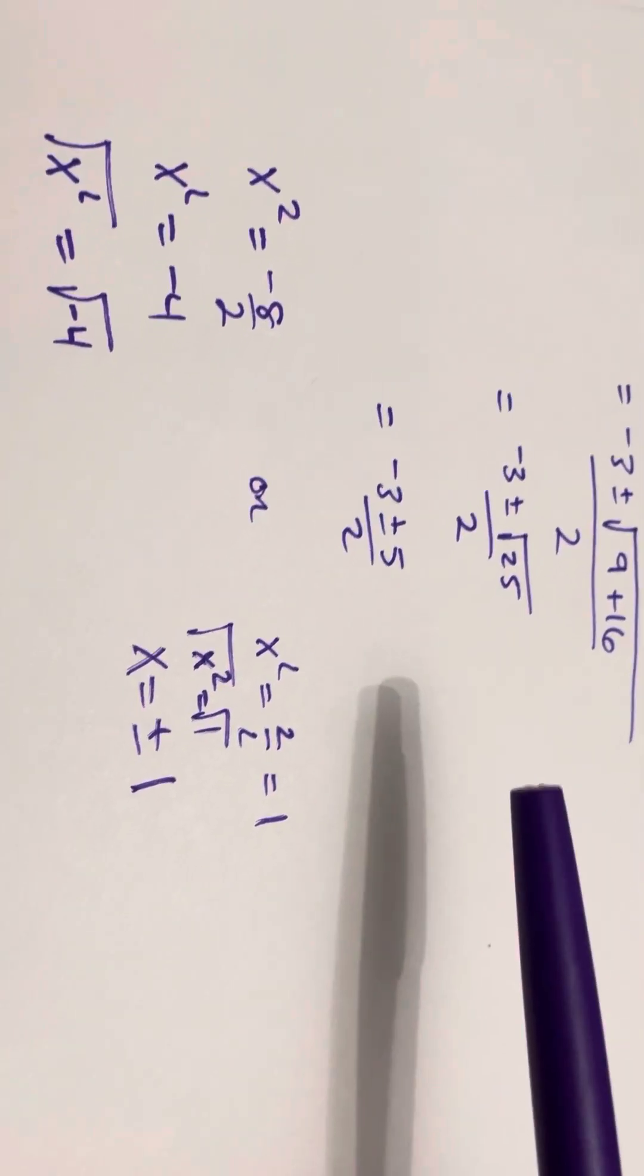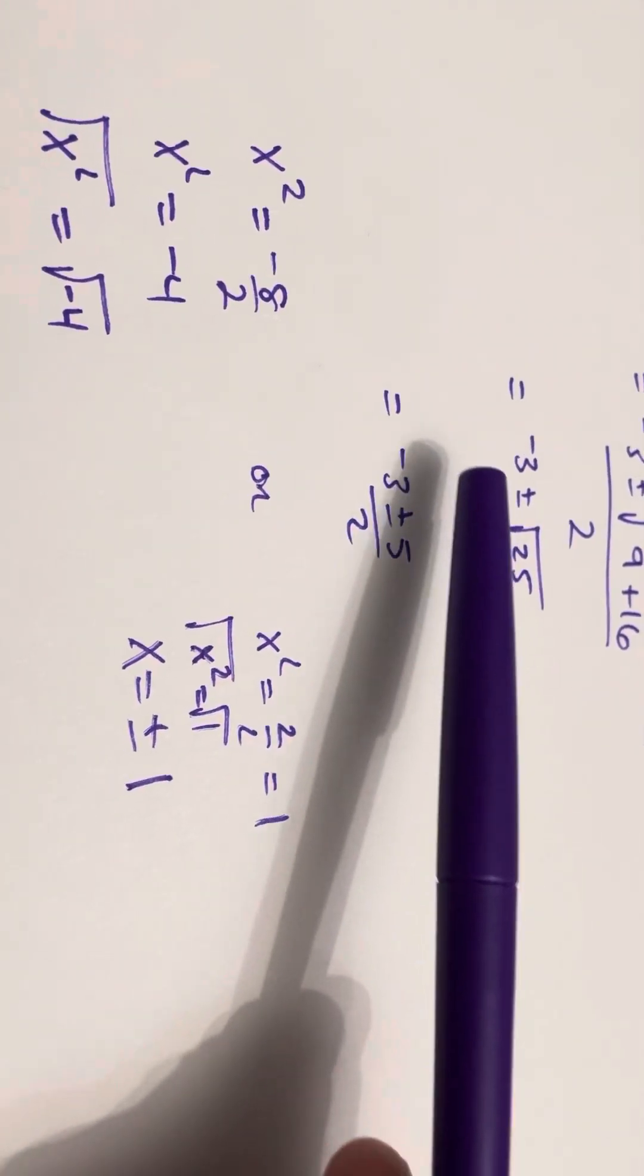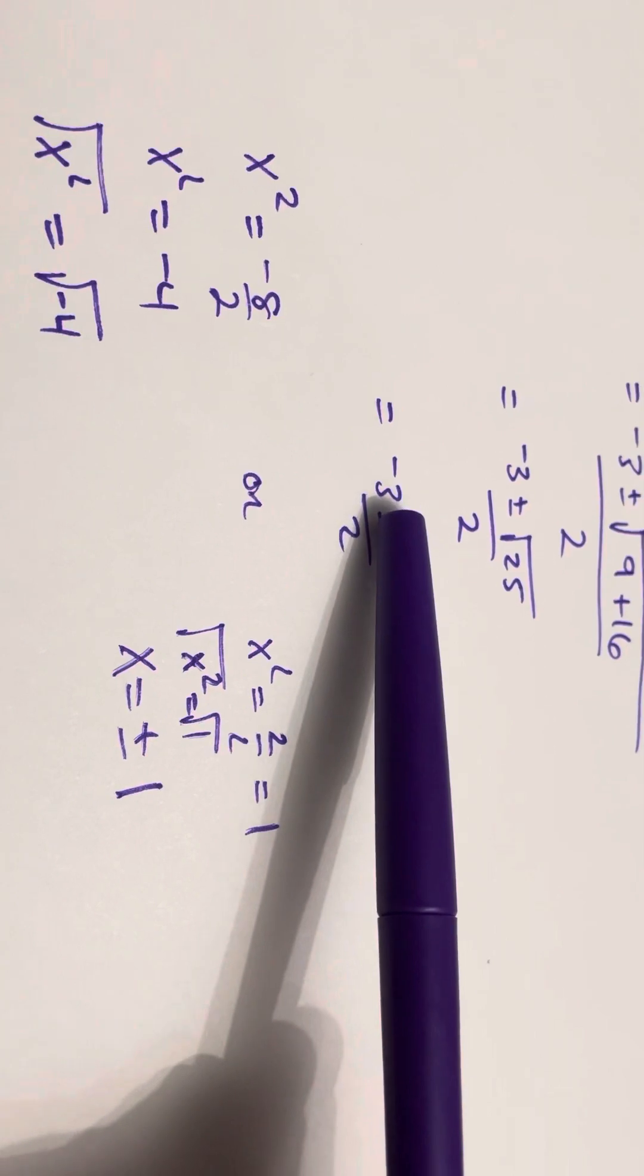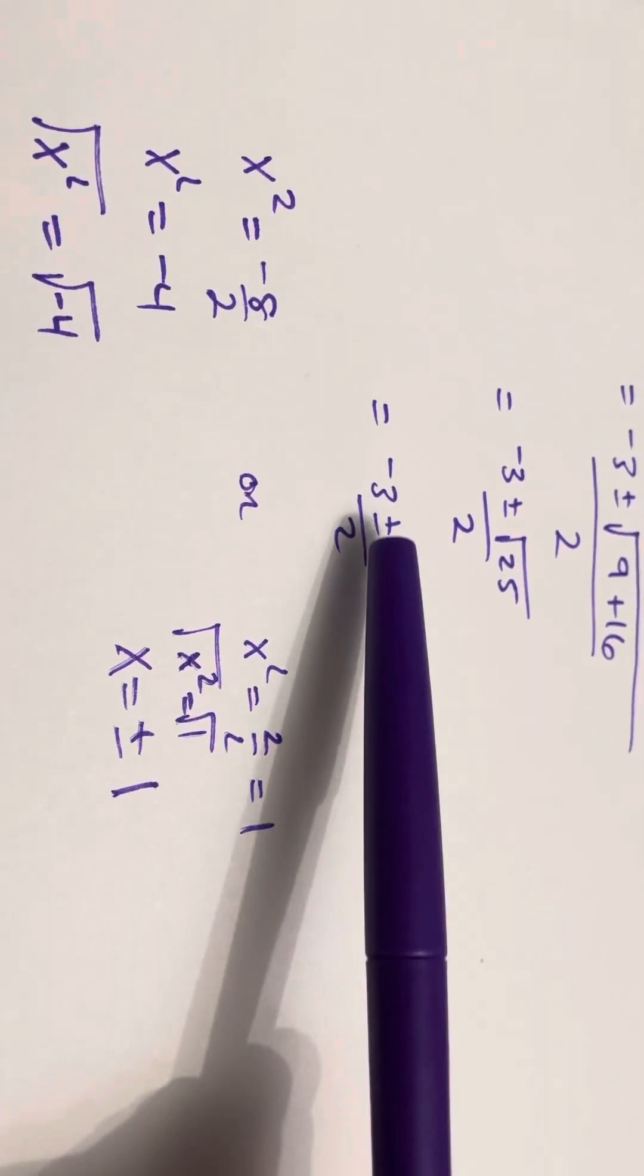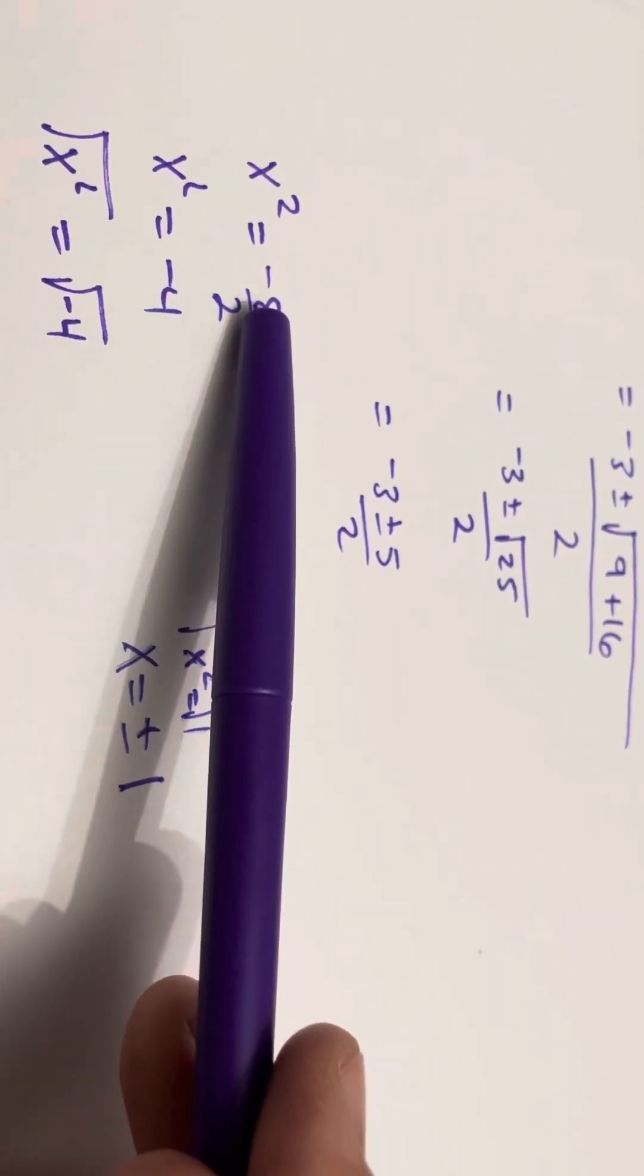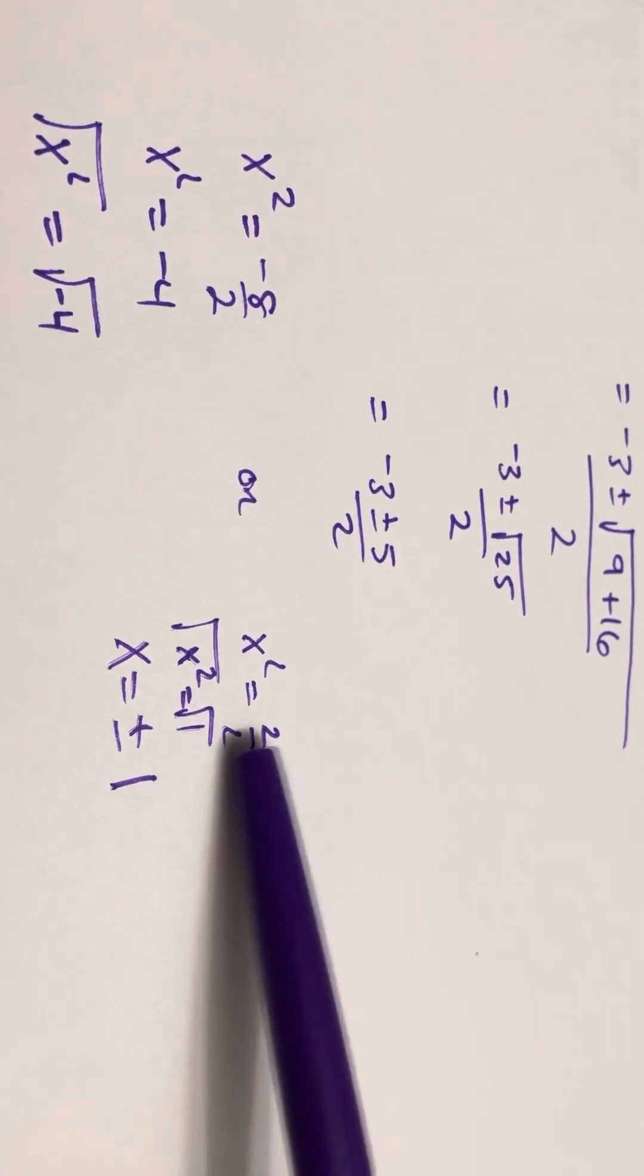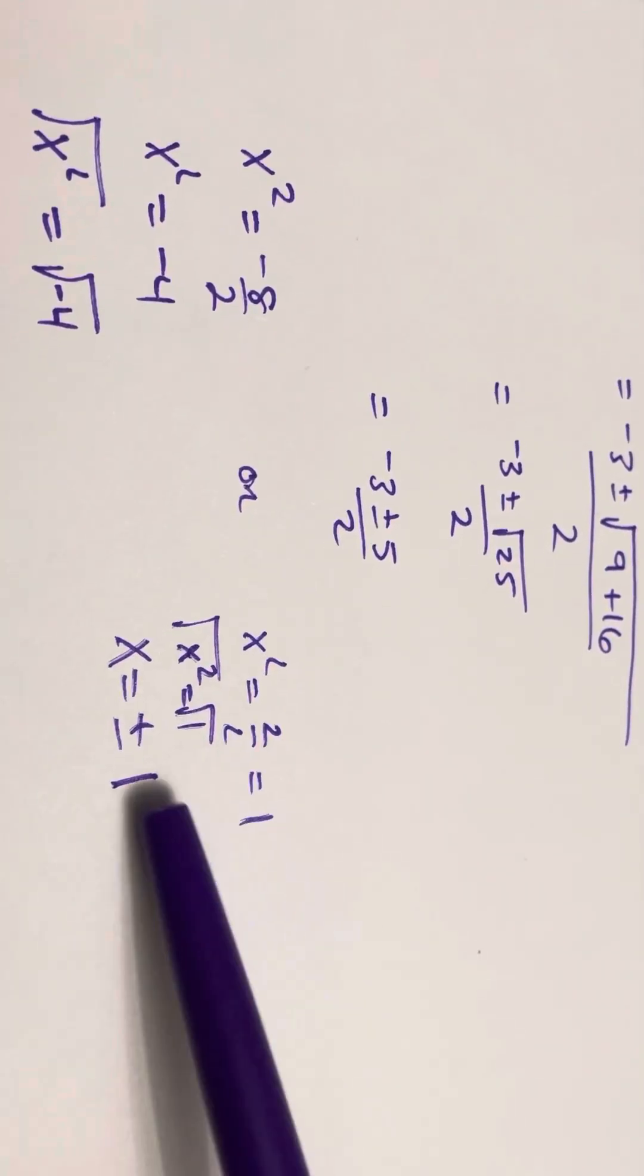And again, that's my dog. Sorry. So, I have negative 3 plus or minus 5 all over 2. And so, you actually have negative 3 minus 5, which is negative 8 over 2. And you have negative 3 plus 5, which is 2 over 2. Now, this one's quick, so we'll just do it fast.